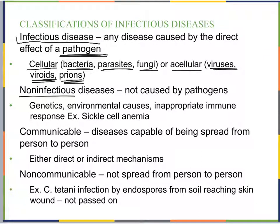Non-infectious diseases are not caused by pathogens — examples include genetic diseases, environmentally caused diseases, or immune response disorders. Sickle cell anemia is an example: red blood cells take a sickle shape due to differently folded proteins, making them rigid. They cannot carry as much oxygen and can't squeeze through capillaries, causing blockages and decreased blood flow — a disease, but not infectious.